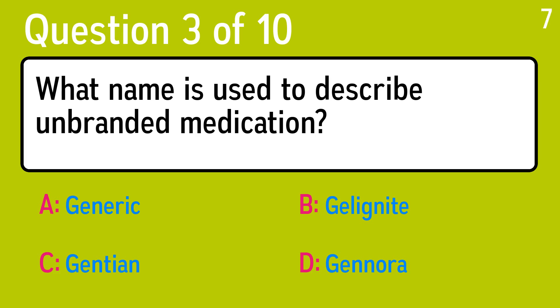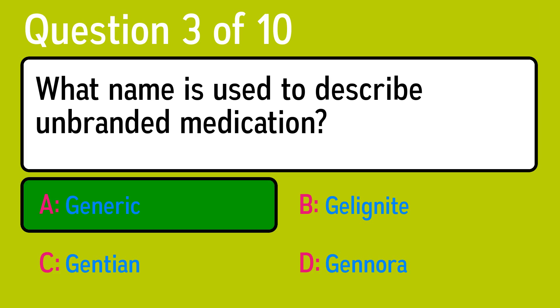Question 3: what name is used to describe unbranded medication? The correct answer is A, generic.